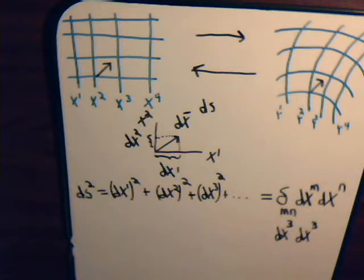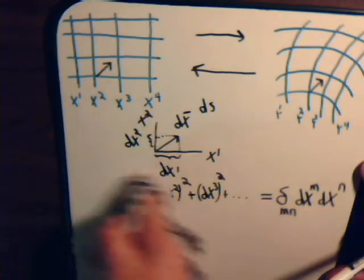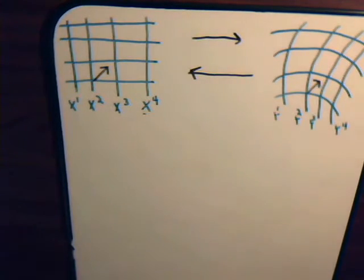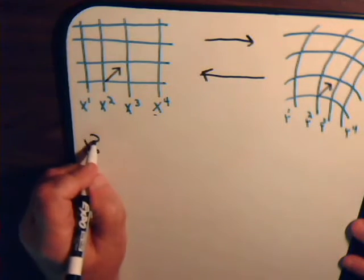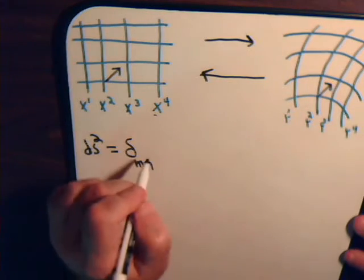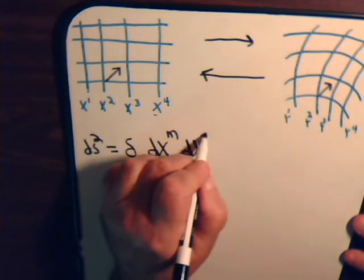So, here is just a real handy way to use the properties of the Kronecker delta function. When these are not equal, it's 0. When they are equal, it's 1. And again, we know that with these repeated indexes, upper or lower, that we're going to be summing over them. So, here then, we can just write that ds squared equals the Kronecker delta mn dx^m dx^n.